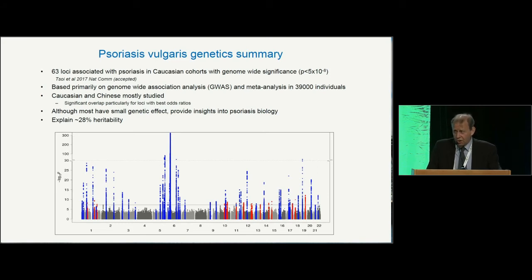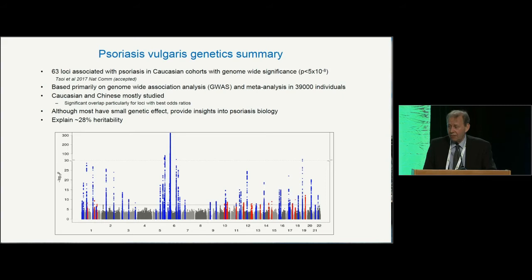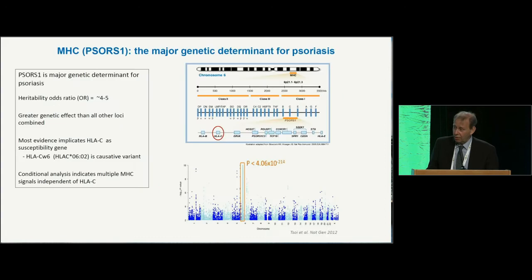The data I'm going to present is based primarily on genome-wide association scans and meta-analysis, and in the case of Alex's study included data derived from 39,000 individuals with psoriasis. As well as Caucasian studies, there's been a lot of work done in China, and there is significant overlap in terms of what's been identified, particularly those with the better odds ratios. Although most of the identified loci have small genetic effect, they provide significant insight into disease biology. Currently they explain around 30% of the heritability, meaning 70% is still missing.